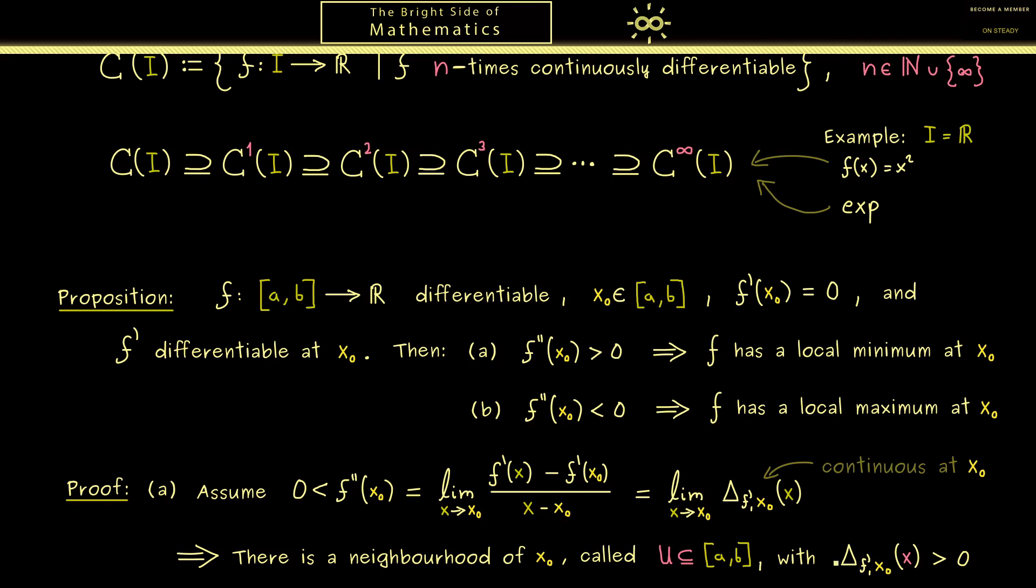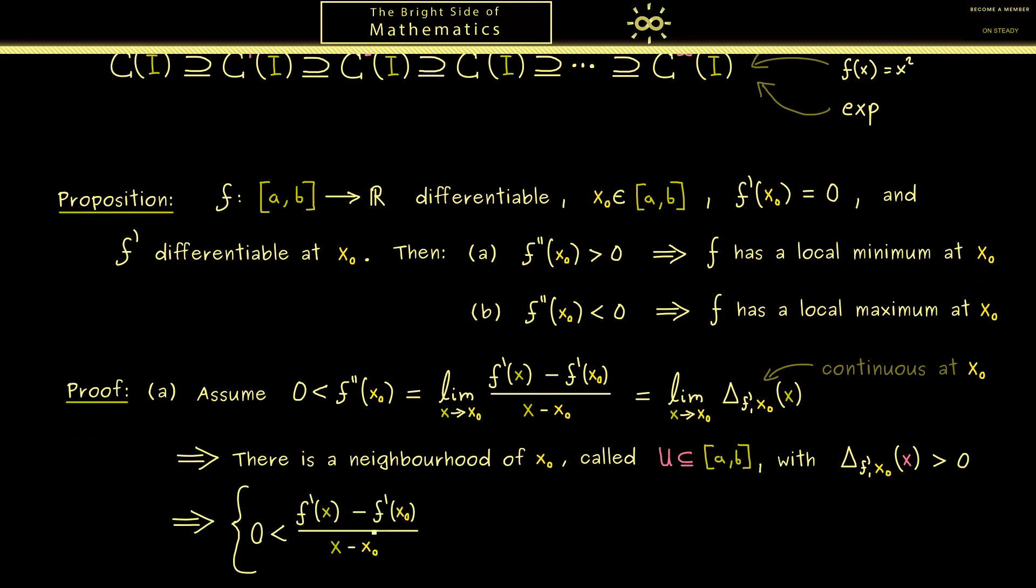Now we can use that this delta function here is given as the difference quotient. And that we know f' of x₀ vanishes. Hence here we find exactly two cases. In order to see this let's remove our f' of x₀ and then we have a nice fraction here which is as we know positive. So either the numerator and the denominator are positive or they are both negative. Other things we cannot have. Now because x comes from the neighborhood U we are either on the left hand side of x₀ or on the right hand side. If we are on the left hand side the denominator is negative and therefore f' of x has to be negative as well. And then of course on the right hand side we find the positive sign.